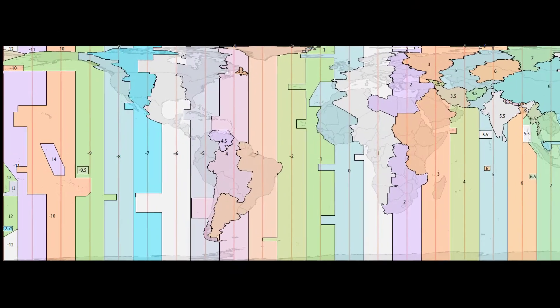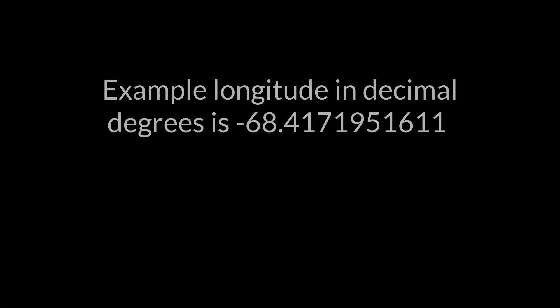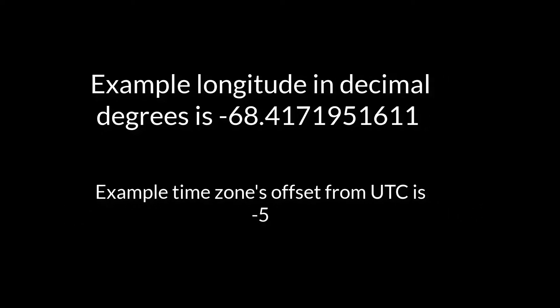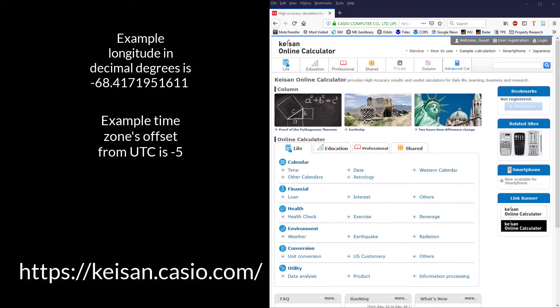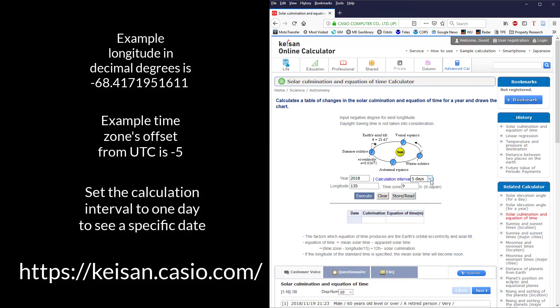Refer to a time zone map to find your offset from UTC. Once you've gotten those two things figured out, head over to Casio Computer's Fantastic Solar Culmination and Equation of Time Calculator. Fill in your longitude and time zone offset and set the calculation interval to one day.